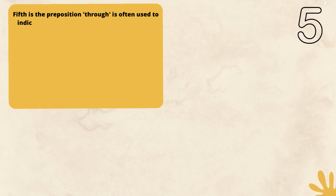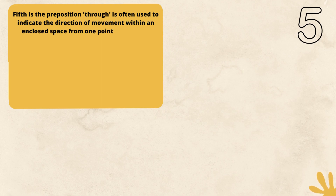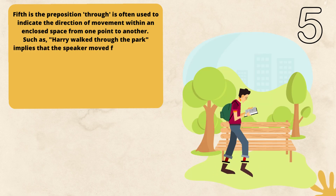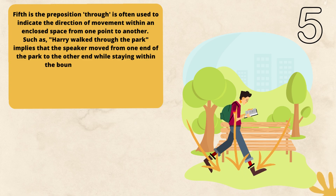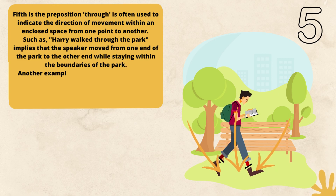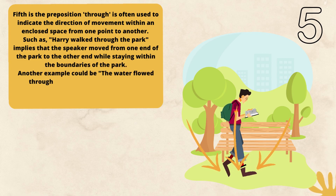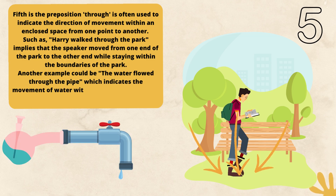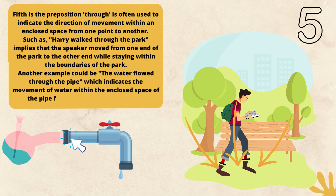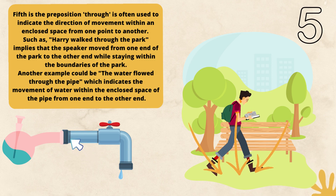Fifth, the preposition 'through' is often used to indicate the direction of movement within an enclosed space from one point to another. Such as: Harry walked through the park, which implies movement from one end of the park to the other while staying within the boundaries of the park. Another example could be: the water flowed through the pipe, which indicates the movement of water within the enclosed space of the pipe from one end to the other.